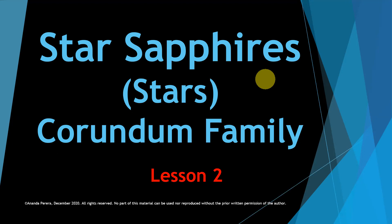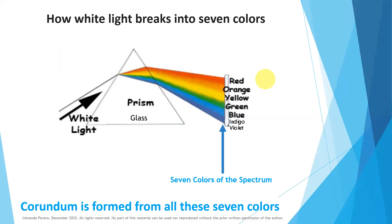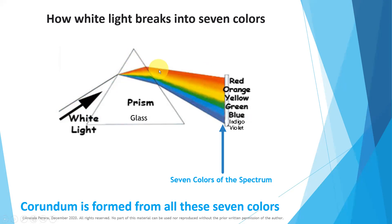Now we are learning how stars are occurring. First of all, we have to understand this. This is a glass prism and white light is coming in this path. It will turn a little bit inside the glass, because outside is air and inside is glass. Inside the glass, light turns at a slight angle. After that, again it passes into air and turns again, breaking all 7 colors included in the white light. This is called the spectrum.